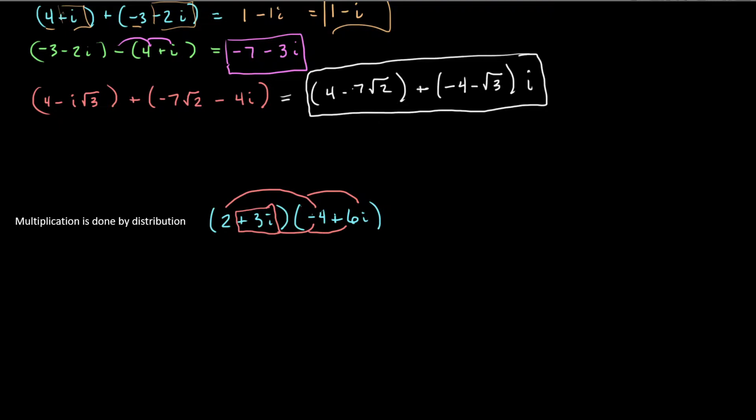So 2 times negative 4 is negative 8. And then 2 times positive 6 is plus 12i. Then I have positive 3i times negative 4 which is negative 12i. Well, isn't that interesting? I wonder why that happens. And then finally, we have this 3 times 6, which is plus 18. But then we have i times i.